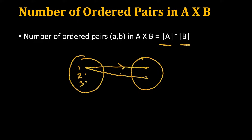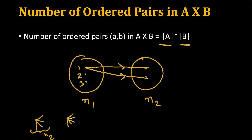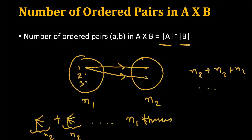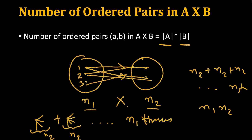Why is this so? If set A has n1 elements and set B has n2 elements, then for each element in A we pick it and pair it with all n2 elements of B, giving n2 ordered pairs. We do this for every element of A, so n2 is added n1 times — giving n1 times n2 total ordered pairs. In general, there will be n1 multiplied by n2 combinations possible.